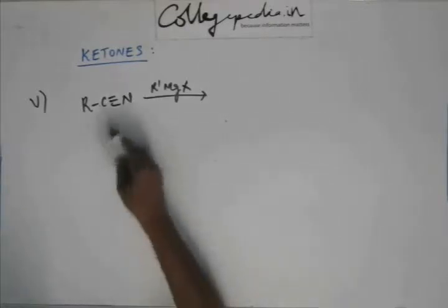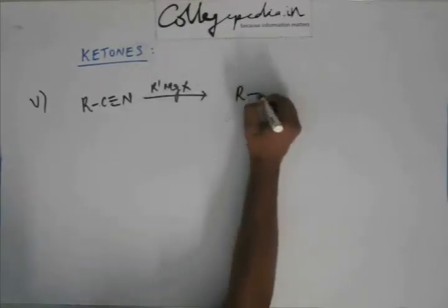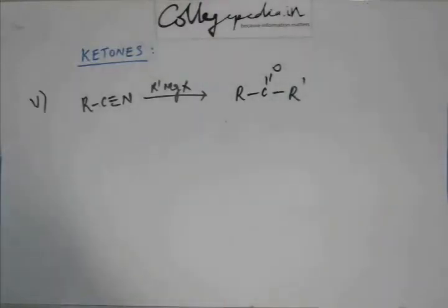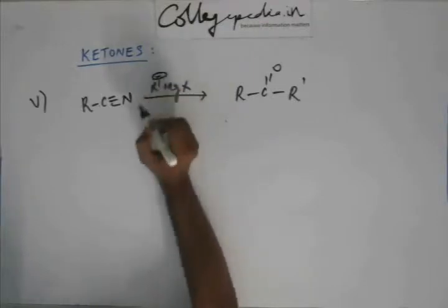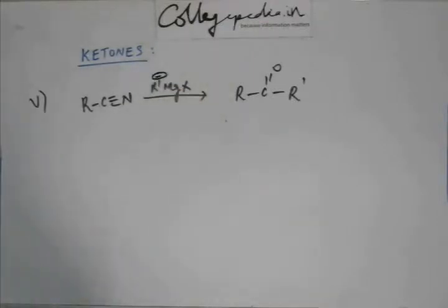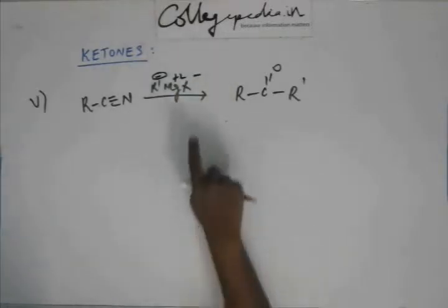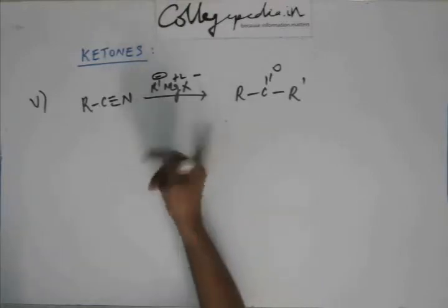So, what happens? This R and this R prime can be same, they can be different. Now, what happens is we get this ketone. Now, we will not see in detail all the steps of how this happens but I am going to quickly give you an idea. This Grignard reagent has this R as the reactive part because this R is R minus Mg plus 2 and this X exist as X minus. So, X minus is stable, Mg plus 2 is stable. This R minus is the one that goes for reaction.